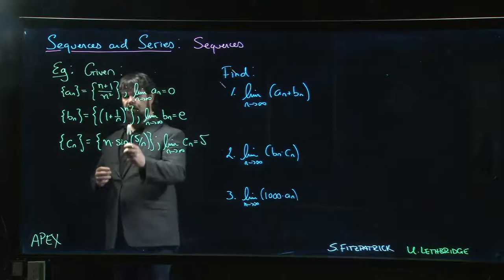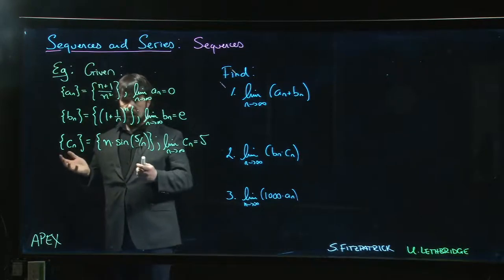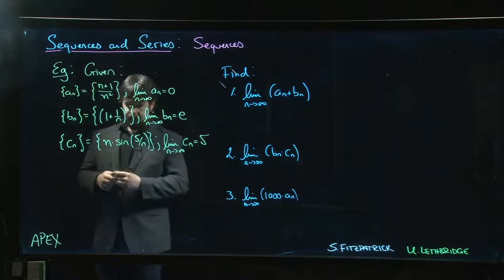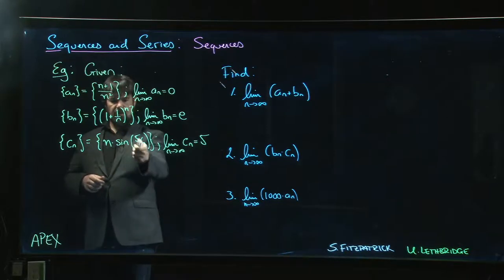This is something of the form one to the infinity - that's one of the forms that we know how to handle. Finally here, this one's a little bit tricky. If you try to take the limit, well n is going to infinity, five over n is going to zero, so it's like infinity times zero.